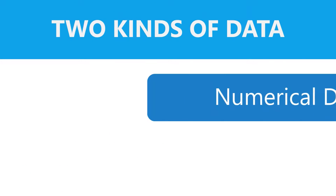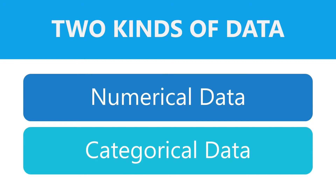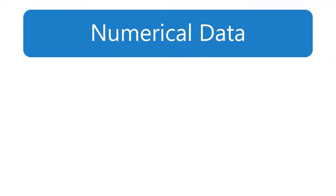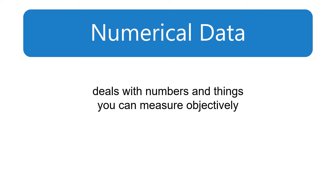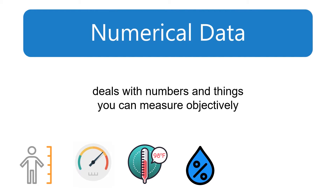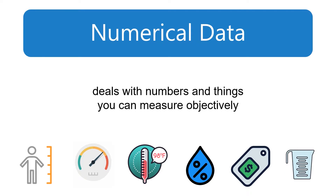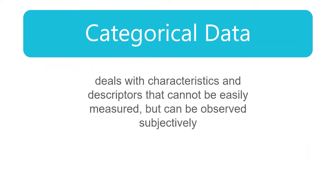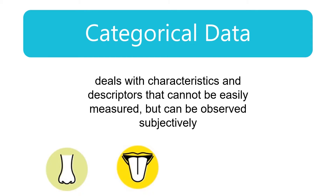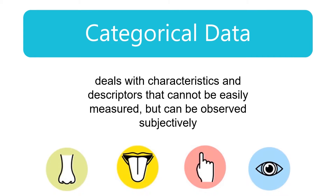There are two kinds of data: numerical or quantitative data, and categorical or qualitative data. Numerical data deals with numbers and things you can measure objectively, such as height, speed, temperature, humidity, prices, and volume. Whereas categorical data deals with characteristics and descriptors that cannot be easily measured but can be observed subjectively, such as smells, tastes, textures, attractiveness, and color.